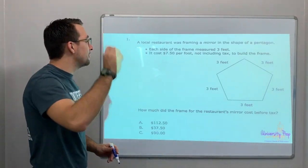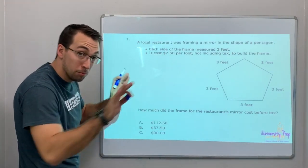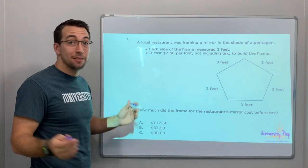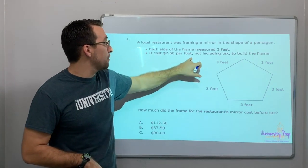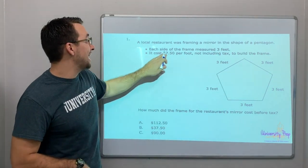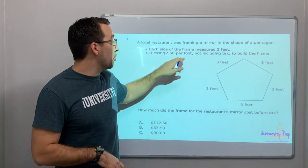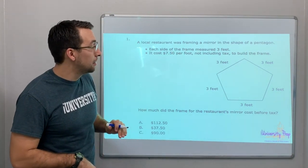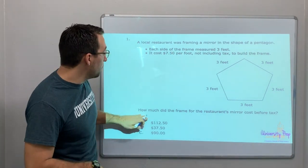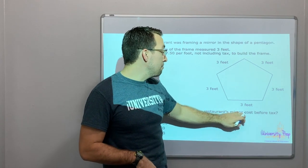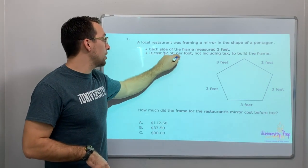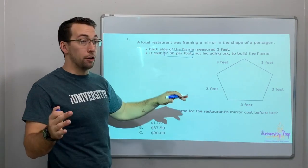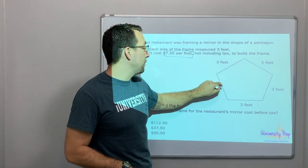Number one: perimeter, area, volume. A local restaurant was framing a mirror in the shape of a pentagon. Each side of the frame measured 3 feet. It cost $7.50 per foot, not including tax, to build the frame. How much did the frame cost for the restaurant's mirror before tax? $7.50 per foot, each side is 3 feet.